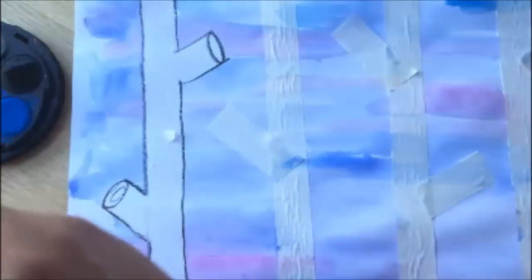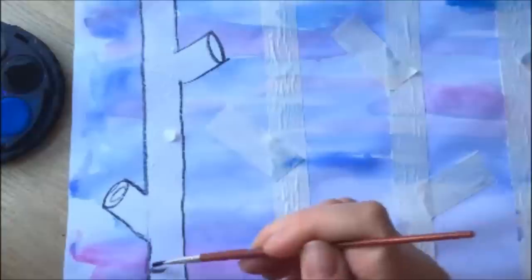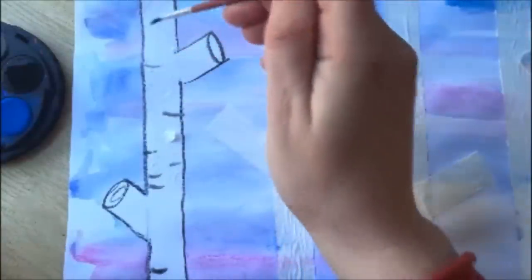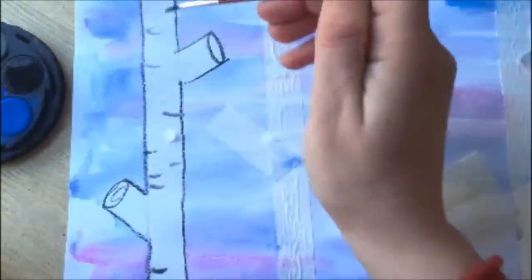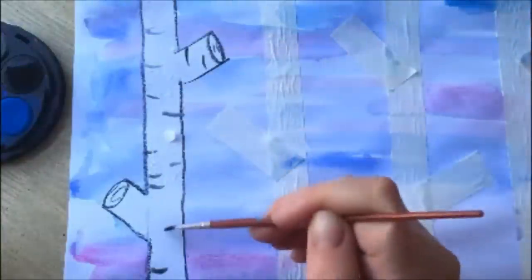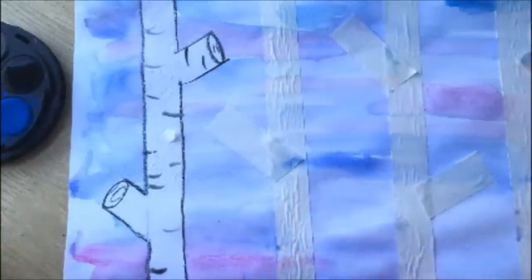And then you just add little details that kind of represent the lines you get on birch trees. There you go. A bit of water, a bit more color. And then you can have a couple going around here and maybe do that. And there you've done your own wintry birch tree.